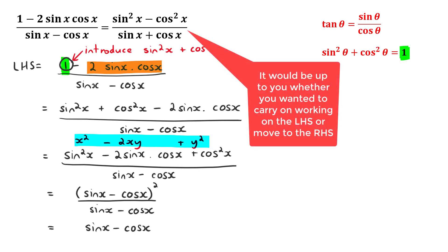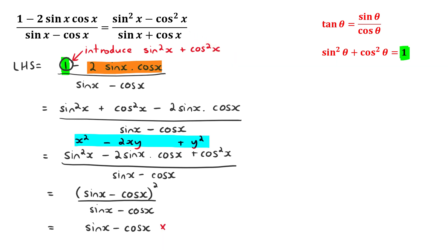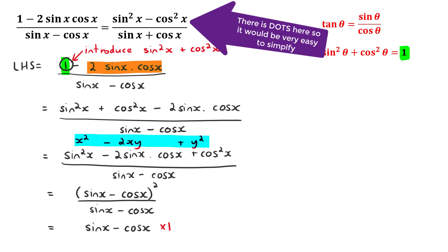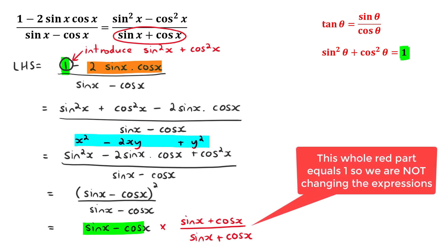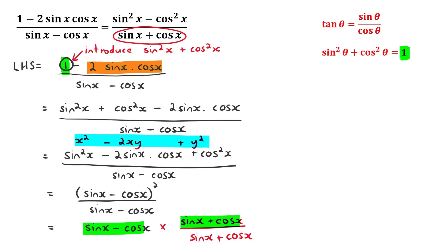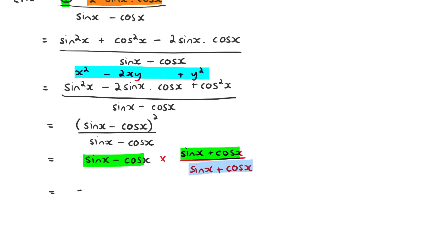We have two options: work with the right-hand side, or multiply by a factor of 1 as shown in the previous example. To introduce the denominator (sin x plus cos x), we multiply by (sin x plus cos x) over (sin x plus cos x). This forces the denominator we want to appear, and the numerator becomes (sin x minus cos x)(sin x plus cos x) — which is a difference of two squares. Our final answer comes out as (sin squared x minus cos squared x) over (sin x plus cos x).